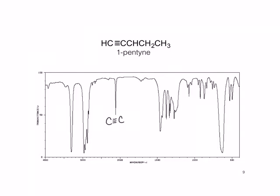So now you should have a better idea of the types of functional groups that we can identify using IR spectroscopy. Remember that we can identify an unknown compound based on its IR spectrum by the functional groups that are present and by the functional groups that we don't see in the IR spectrum. Make sure to keep both in mind when problem solving.